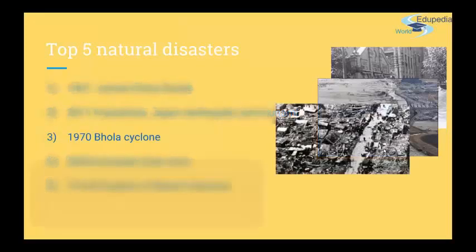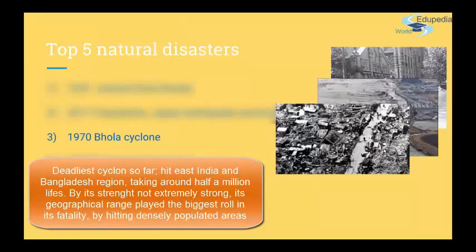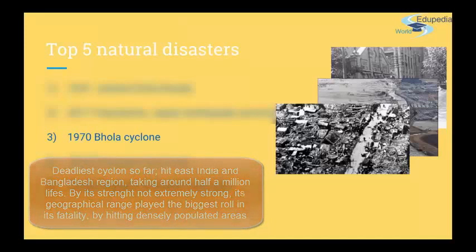Next is the Bhola cyclone that happened in Bengal and East Pakistan in the 1970s, and at that time it killed around half a million people. Although Bhola only reached the equivalent of a category 3 hurricane, the cyclone flooded onto the densely populated, low-lying plains of the Ganges Delta and wiped out hundreds of villages overnight. Even though this disaster wasn't so huge on its own, its effect was immense because it struck a densely populated area.